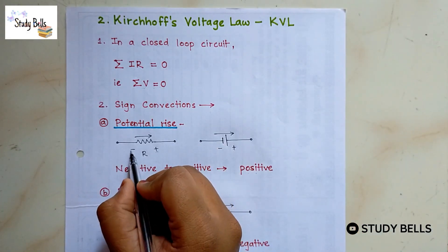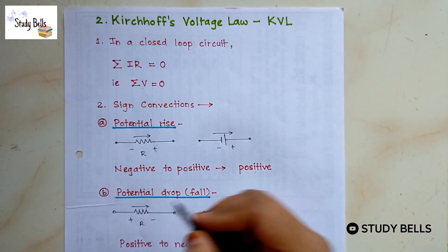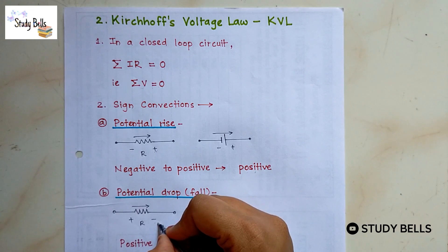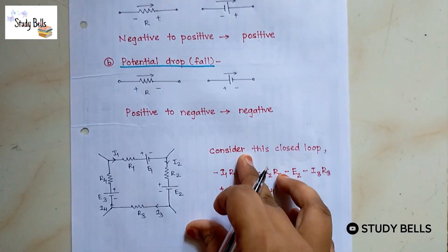When we go negative to positive, the sign taken positive. When we go positive to negative, sign is negative. Now we will see this from one example.